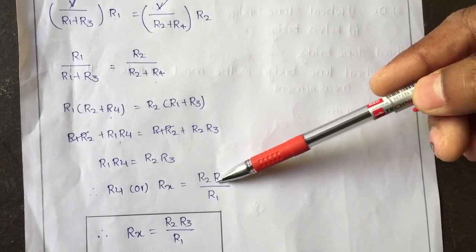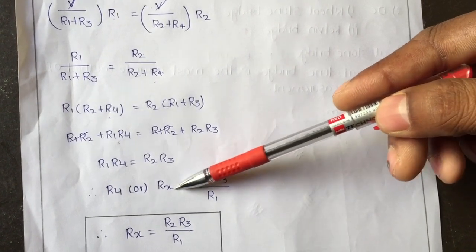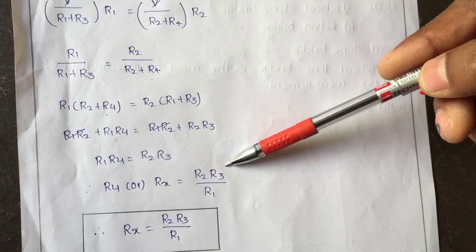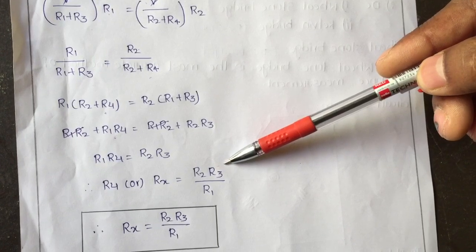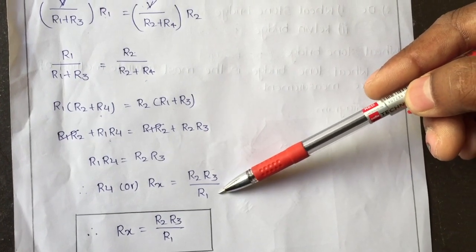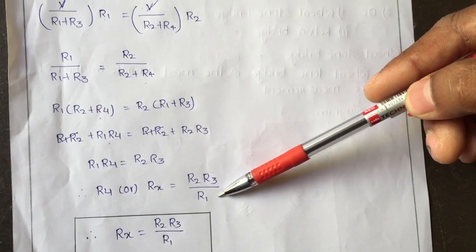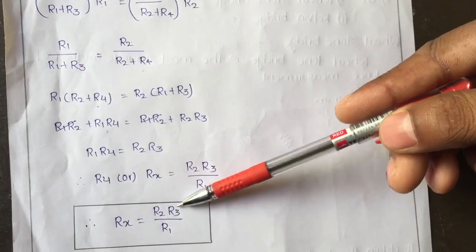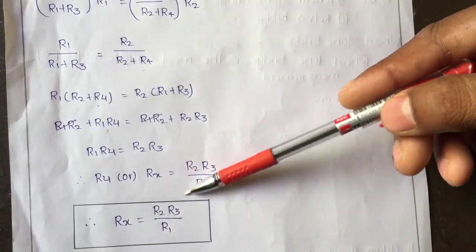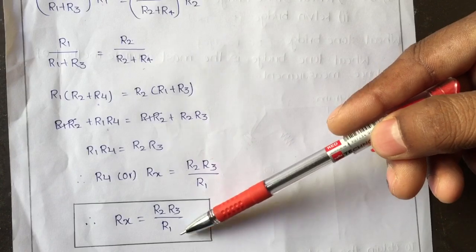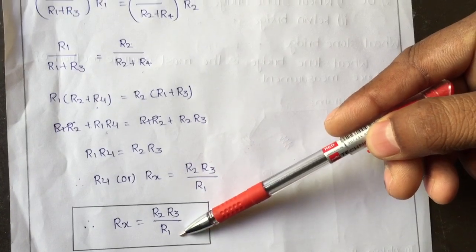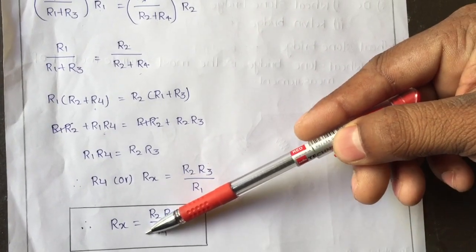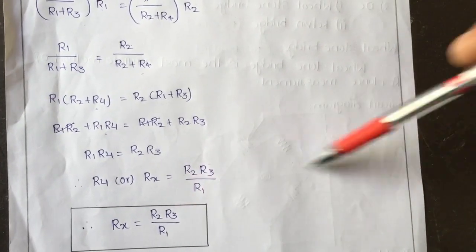For Rx (or R4), R2 and R3 are the adjacent resistances and R1 is the opposite resistance. So the unknown resistance equals the product of the adjacent resistances divided by the opposite resistance. This is how we calculate unknown resistance using the Wheatstone bridge.